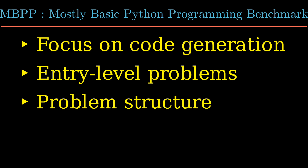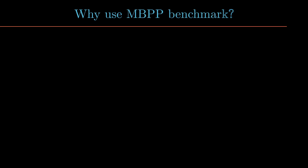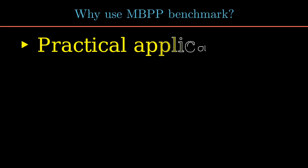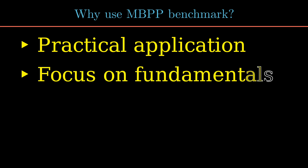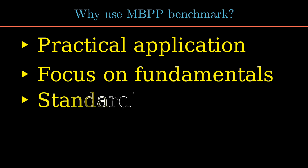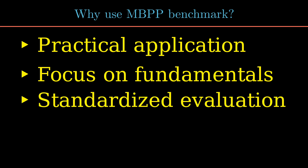The MBPP benchmark specifically targets the LLM's ability to translate human-written instructions into working Python code — crucial for applications where LLMs can assist programmers or automate basic coding tasks. The benchmark structure includes a task description, a sample solution, and a test case. It assesses skills directly relevant to real-world programming scenarios, the use of entry-level problems ensures evaluation of core programming concepts, and the publicly available dataset with automated tests allows for consistent comparison of different LLMs.